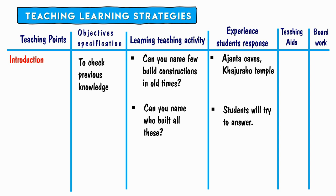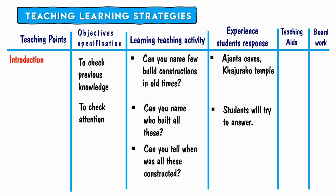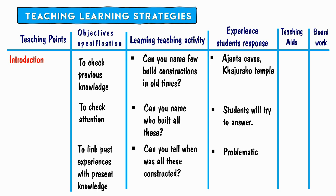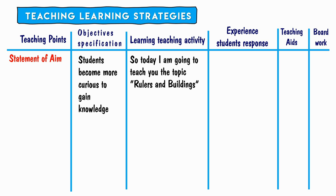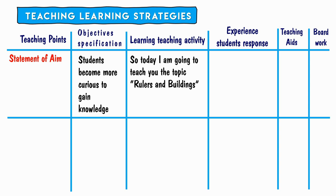The objective here is to check previous knowledge and check the attention of students. The teacher asks: 'Can you tell when all this was constructed?' At this point, the student faces some difficulty. The objective then is to link past experience with present knowledge. Statement of aim: 'Today I am going to teach you the topic Rulers and Buildings.' The objective is that students become more curious to gain knowledge.